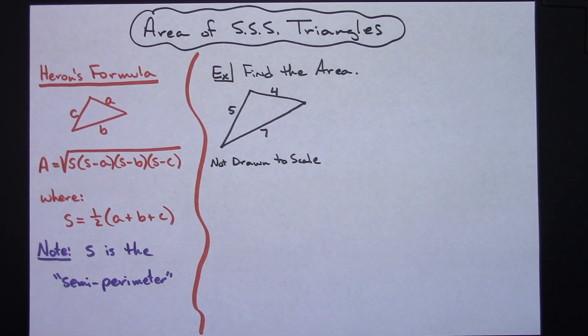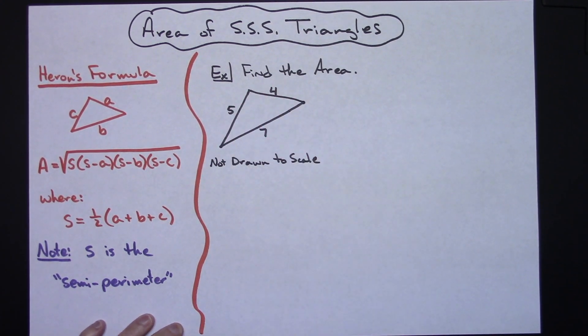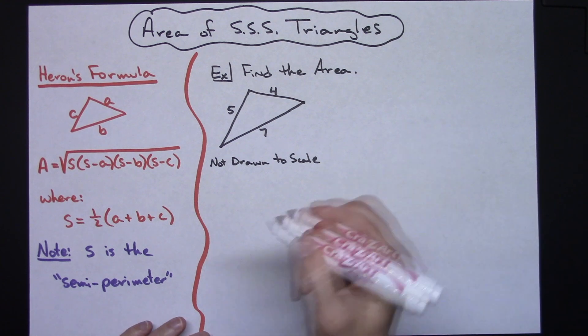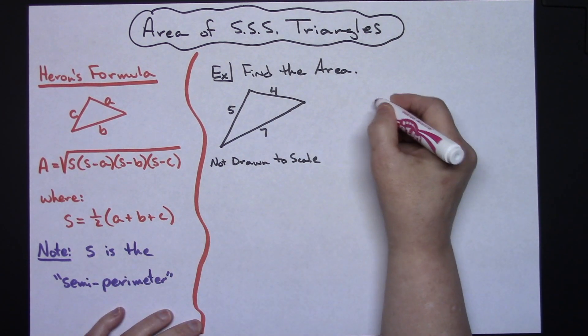So in this formula the s is called the semi-perimeter. It's a relatively simple concept, so we're just going to work out one example. Let's suppose you're given something where you're asked to find the area of the triangle and you are given those three sides.